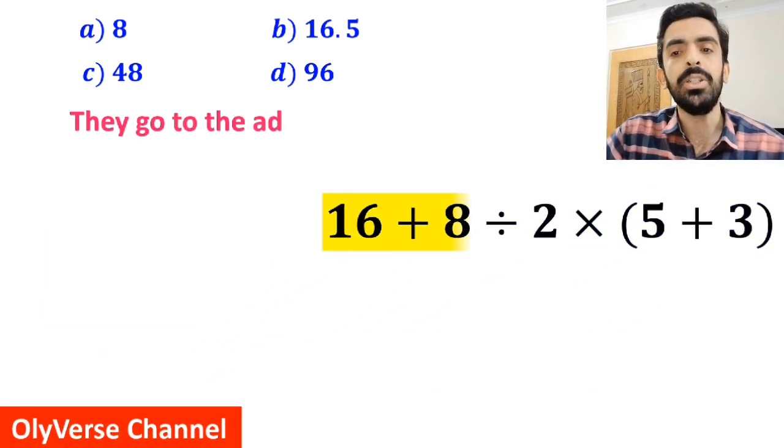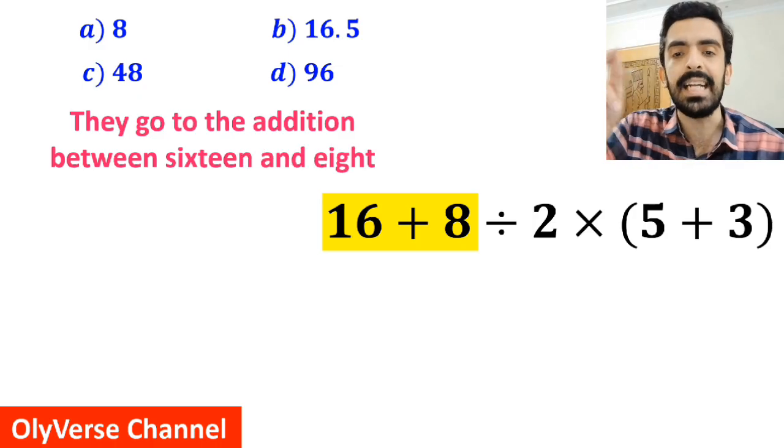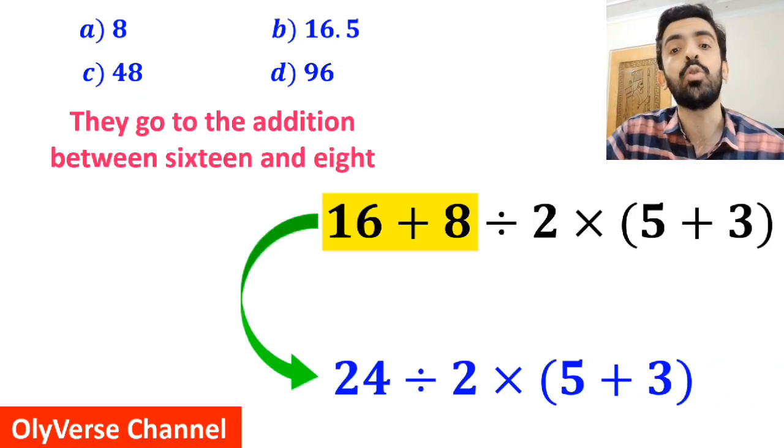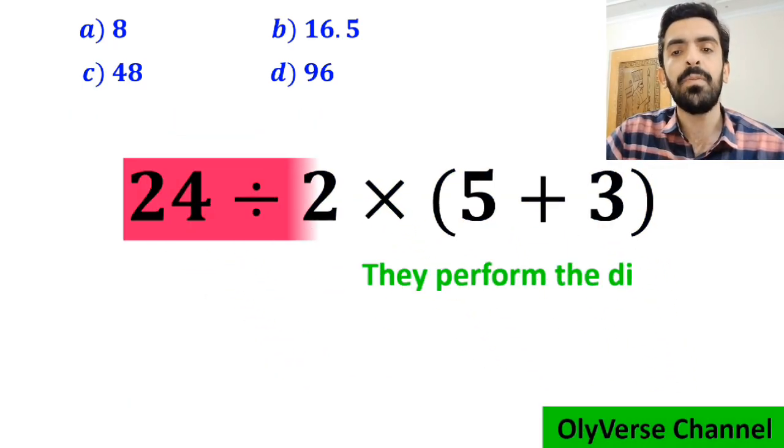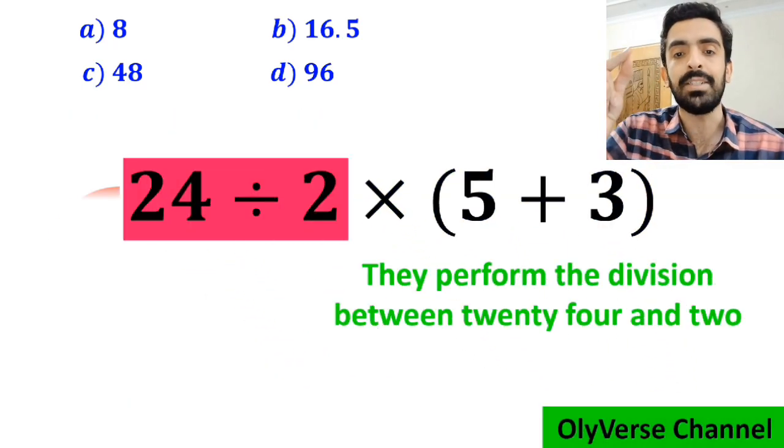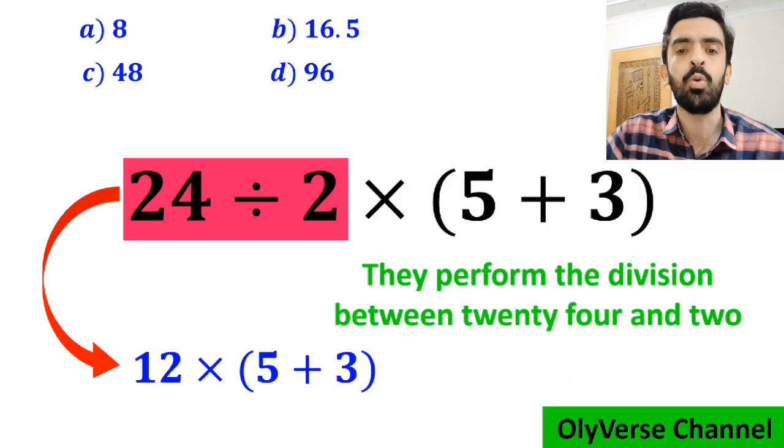In the next step, they go to the addition between 16 and 8 and simplify this expression to 24 divided by 2 times 5 plus 3 inside the parenthesis. Then, they perform the division between 24 and 2 and write this expression as 12 times 5 plus 3 inside the parenthesis.